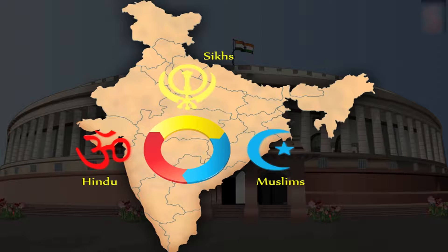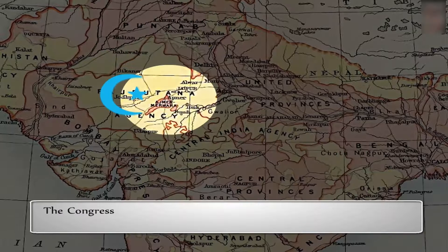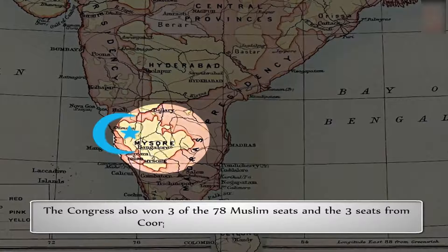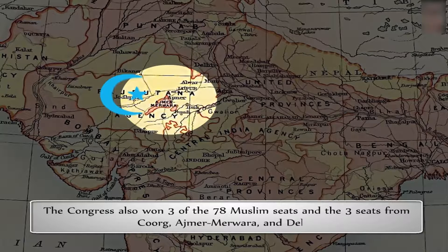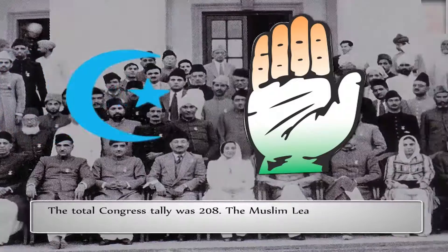The aim was to choose representatives from three major communities — Hindus, Muslims, and Sikhs — as well as those from the general category. The Congress won three out of the four Sikh seats from Punjab, also won three of the 78 Muslim seats, and the three seats from Coorg, Ajmer-Merwara, and Delhi. The total Congress tally was 208; the Muslim League won 73 out of the 78 Muslim seats.